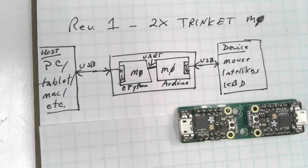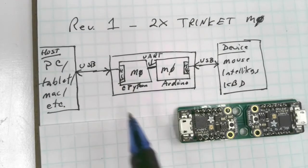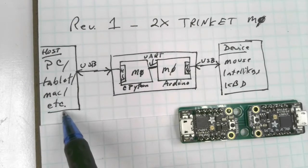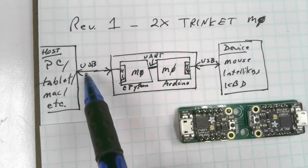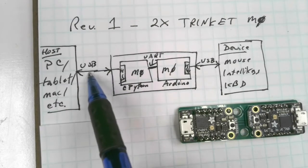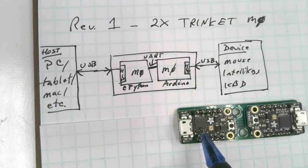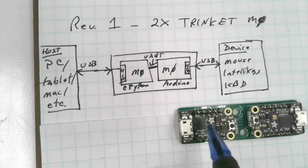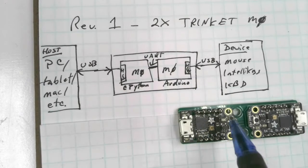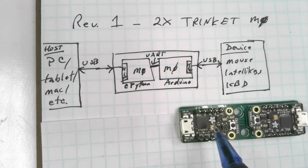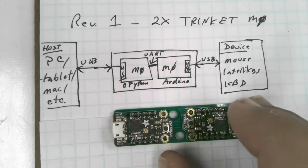Here's the PC, the tablet, the Mac, or whatever else we're trying to use the keyboard on. It's going through standard USB to an HID interface running on this Trinket M0. This Trinket is running CircuitPython, which makes it very easy to modify and tweak and serve our needs very well.